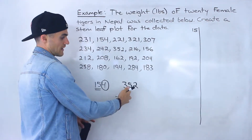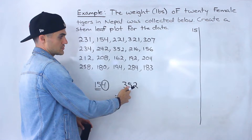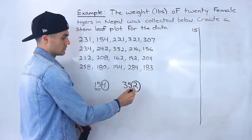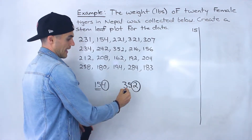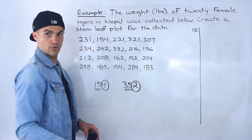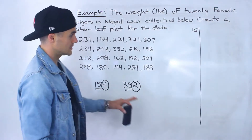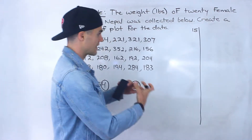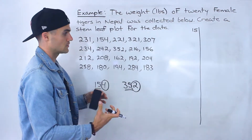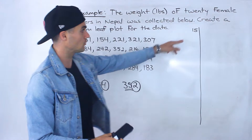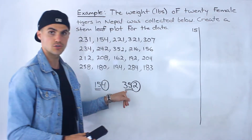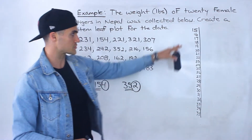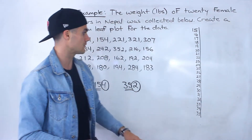If we look at the largest value, 352, the rightmost digit is 2, and the remaining digits are 35, so that's going to be the last stem in the data. Notice that this stem-leaf plot is going to be pretty spread out — it's going to go all the way from 15 to 35. So we fill in all those stems from 15 to 35.